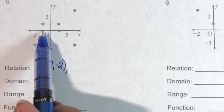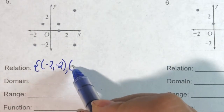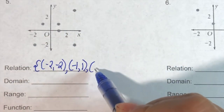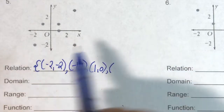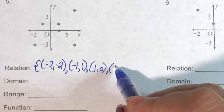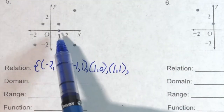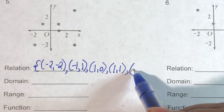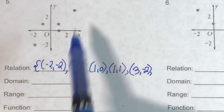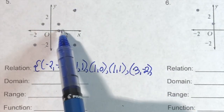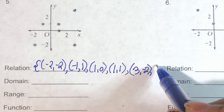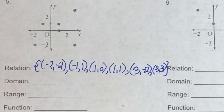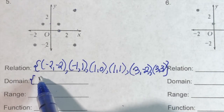How about this point? This is negative one, positive one. Next, this point is three, negative two. And lastly, this point gives us three and three.